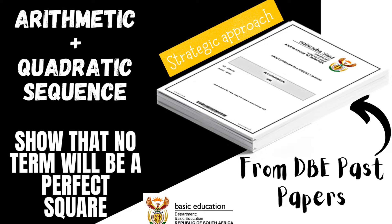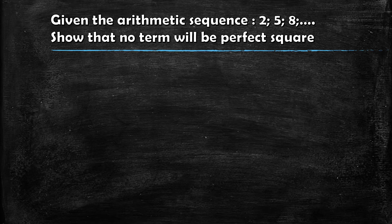Hi, welcome back once again. Today I want us to focus on this challenging question where I'll introduce a strategic approach. It speaks to your understanding of arithmetic and quadratic sequences, and it's about showing that no term will be a perfect square. This was extracted from your Department of Basic Education past papers. Here's the question: given the arithmetic sequence 2, 5, 8, show that no term will be a perfect square.